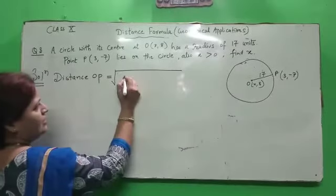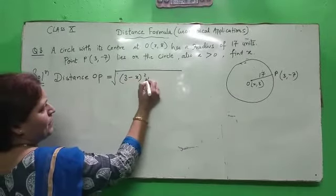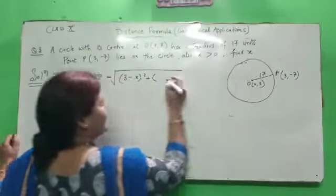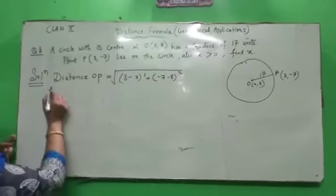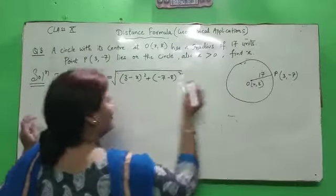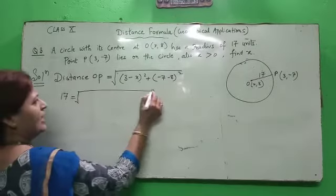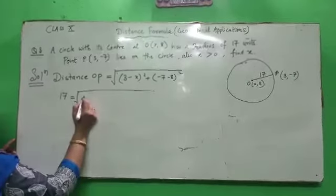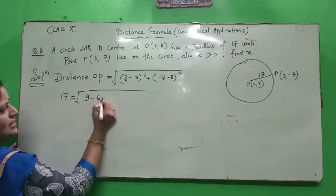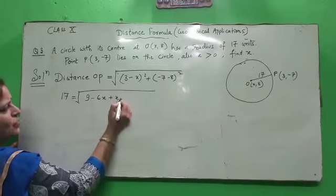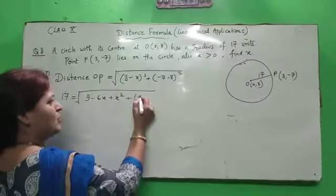distance OP is equal to under root X2 minus X1 square plus Y2 minus Y1 square formula. So value of X2 is 3, so we can simply write 3 minus X whole square plus minus 7 minus 8 whole square.